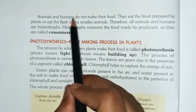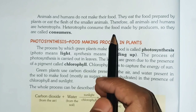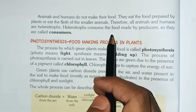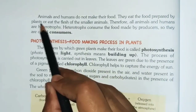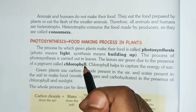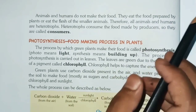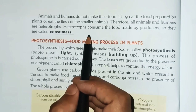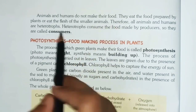Animals and humans do not make their food. What we cook at home is made from plant products or animal products. Animals eat the food prepared by plants or eat the flesh of smaller animals. So plants are autotrophs or producers, and animals are heterotrophs or consumers.